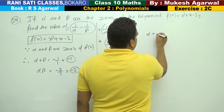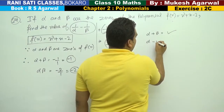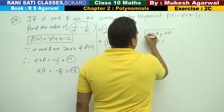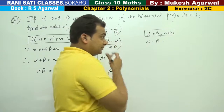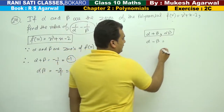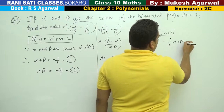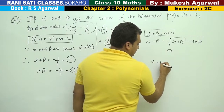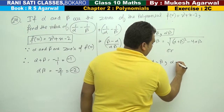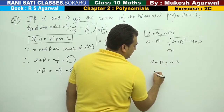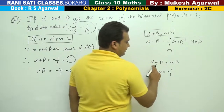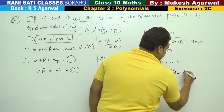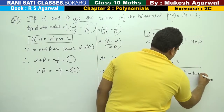So if we have alpha plus beta value available, we can find alpha minus beta using the formula: root of alpha plus beta whole squared minus 4 alpha beta. Similarly, if alpha minus beta and alpha beta are available and we need alpha plus beta, then we use alpha minus beta whole squared plus 4 alpha beta.